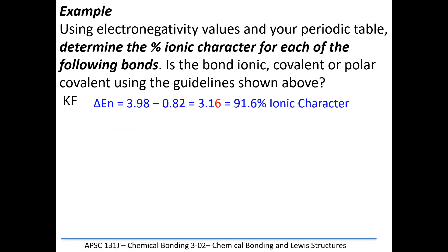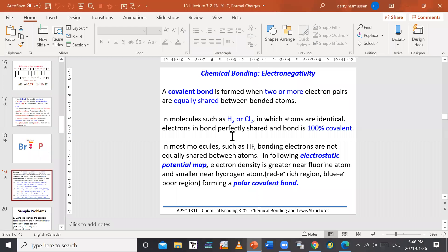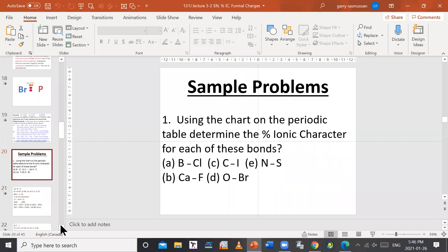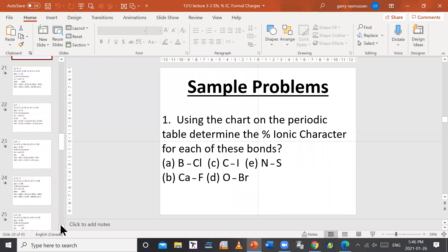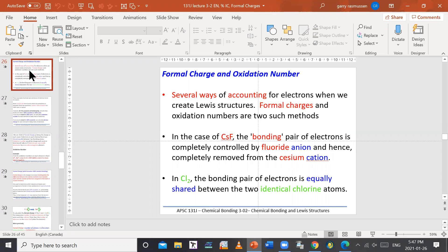I'm going to ask you to solve the practice questions in the PowerPoint presentation, which you can download from the course site. I'll skip ahead — we can take them up at another time. I'd like you to try to figure out the percent ionic character of the bonds formed between the given pairs of atoms for practice. The answers are in the PowerPoint presentation — look them up after you practice them yourself. Now I'm going to shift to the next topic: formal charges and oxidation numbers as tools to understand bonding.